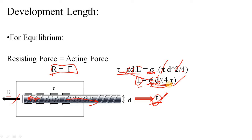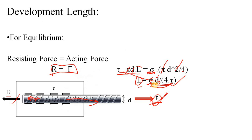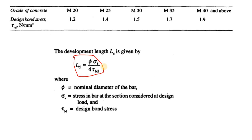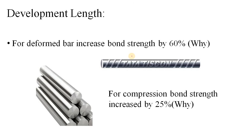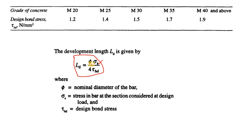Now look at the codal provision as per Indian Standard. You can see that the codal provision and our theoretically derived equation are exactly the same. Sigma is the strength, phi is the nominal diameter of the bar, and tau at the denominator is the bond strength — which depends on the grade of concrete as seen in the code table.